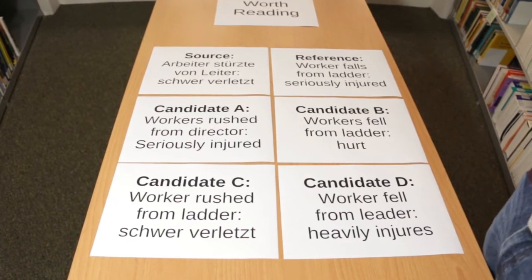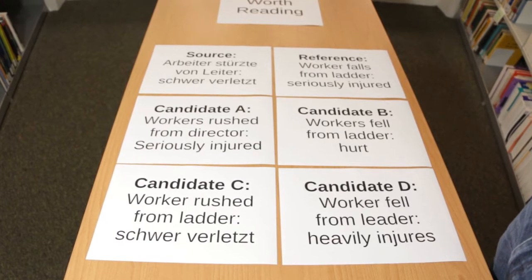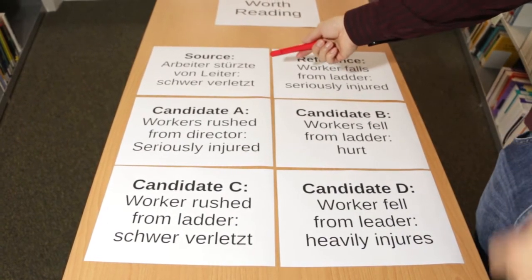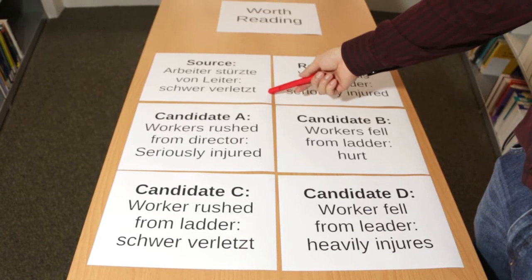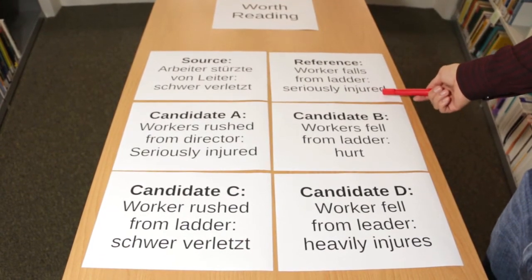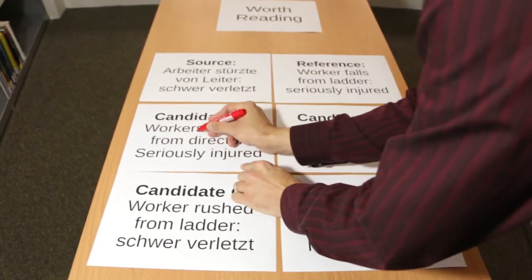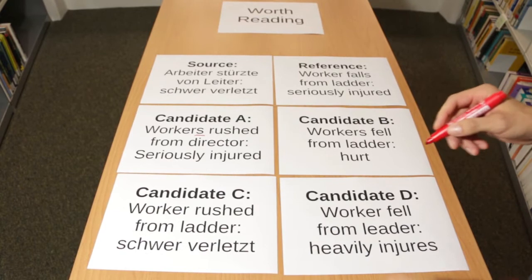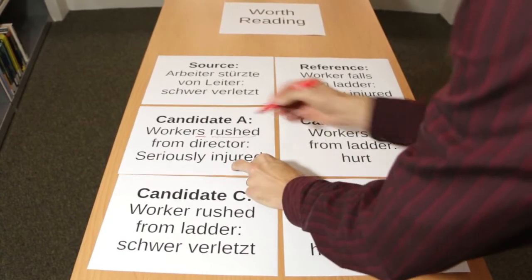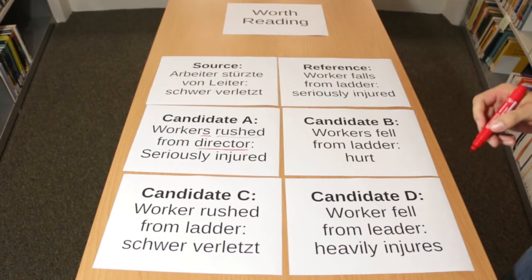The main problem is that many diverse things can go wrong. Take these four sentences for the input "Arbeiter stürzt von Leiter, schwer verletzt." The reference translation is "Worker falls from ladder, seriously injured." Candidate A makes an error in the plural, the verb choice is not perfect, and obviously the word "director" is a bad lexical choice.